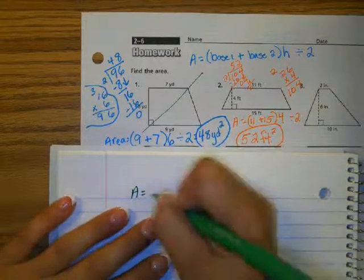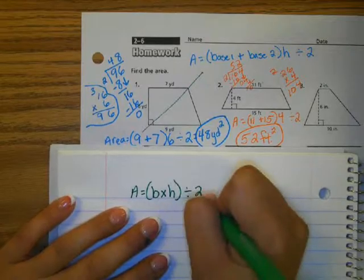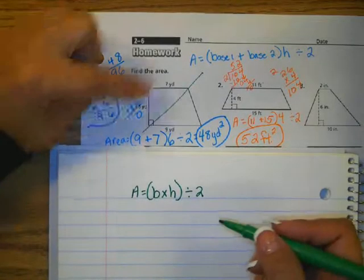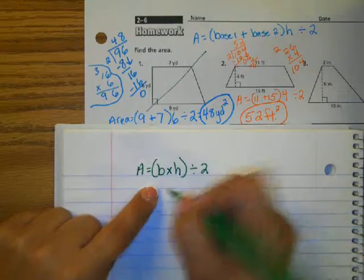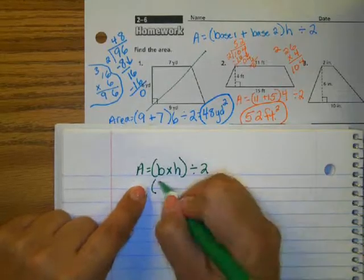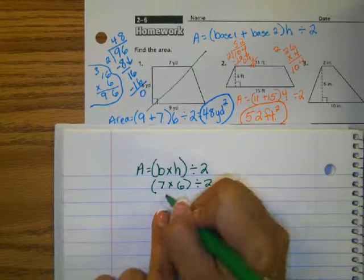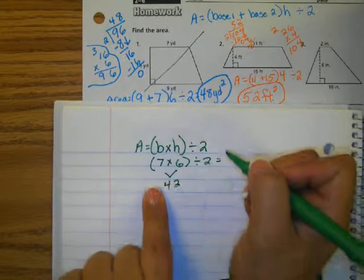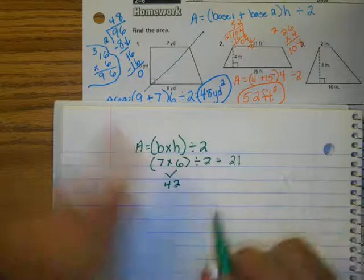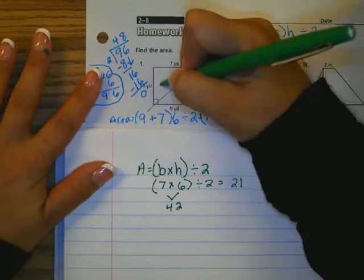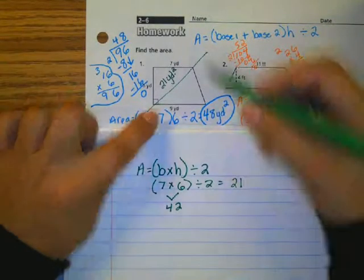If I was going to do it that way, I would say area equals base times height divided by 2. So for the first triangle, one side is 6, one side is 7. 7 times 6 divided by 2. 7 times 6 is 42. 42 divided by 2 is 21. So I know the area of this first triangle is 21 square yards.